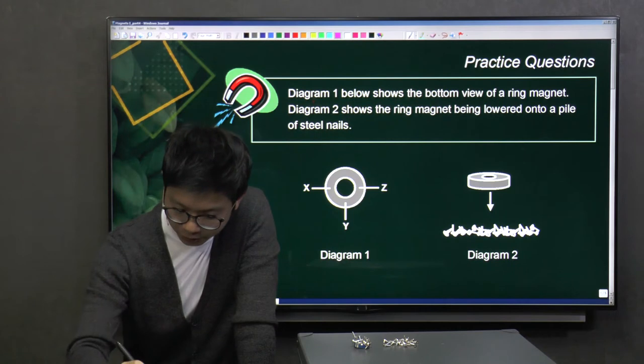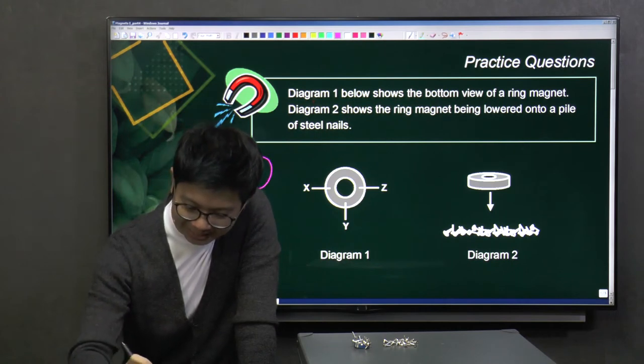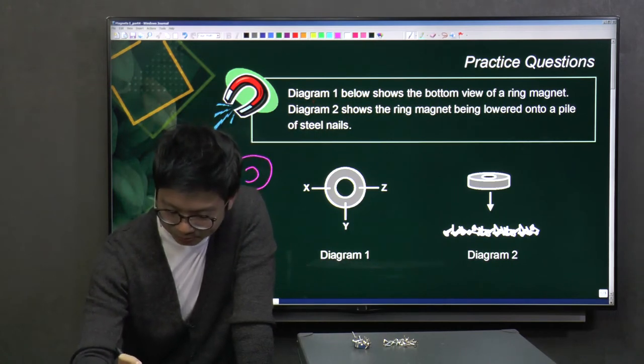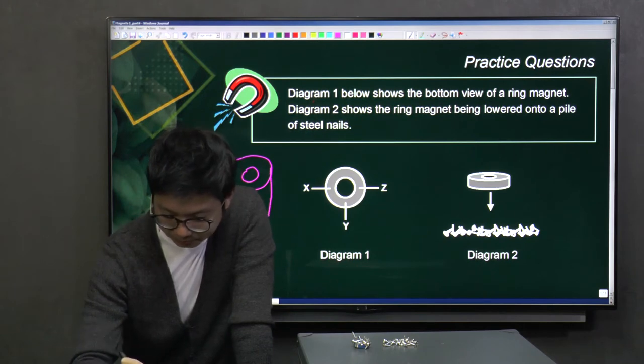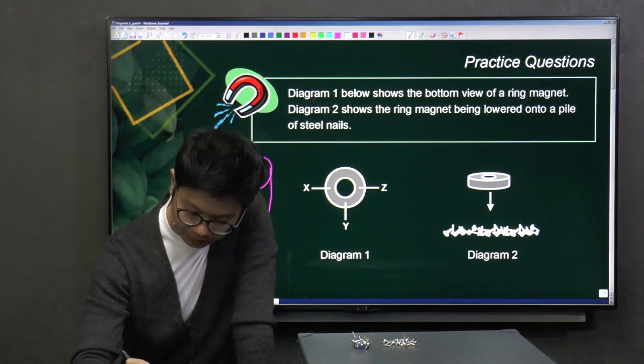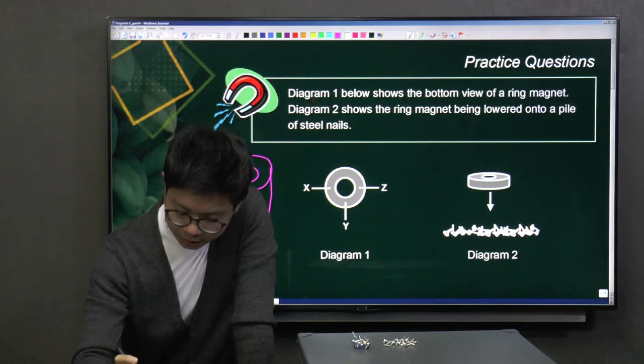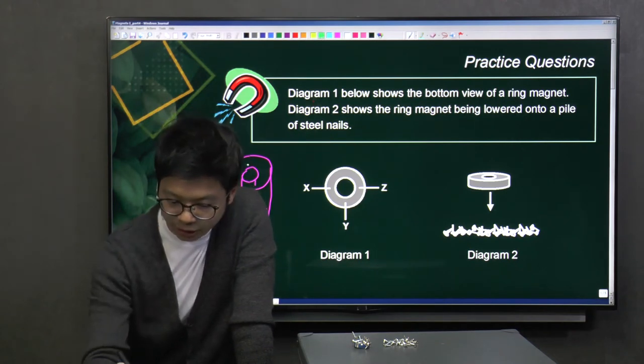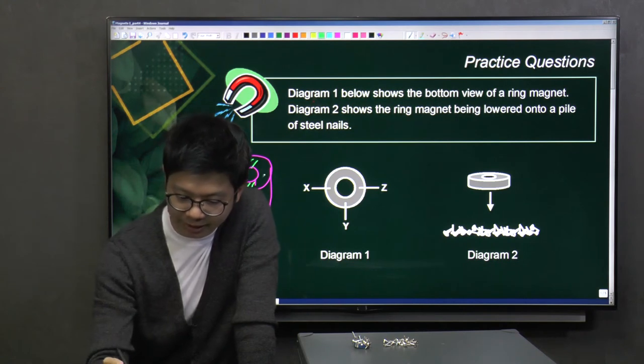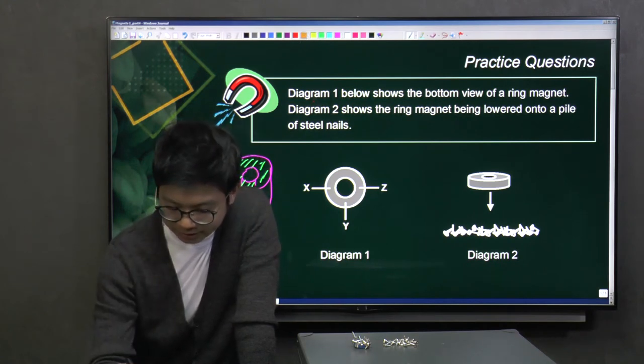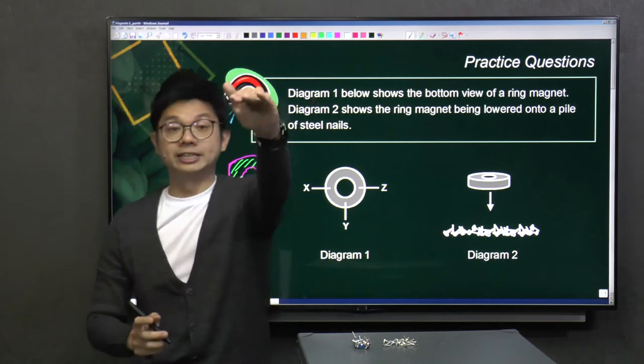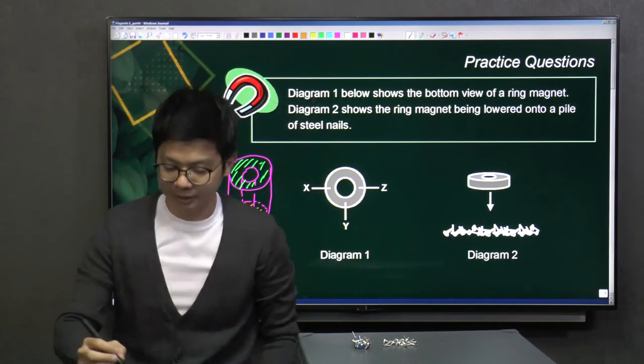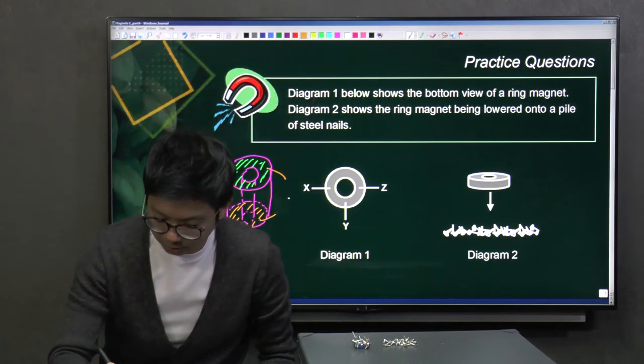If I draw for you a cylinder representing the ring magnet, I have a top face and a bottom face. Let me just shade out the top face and also the bottom face. The two faces on top and below, they are actually the poles.